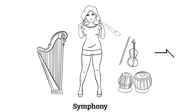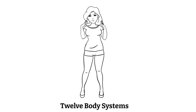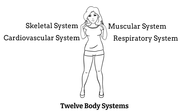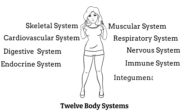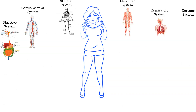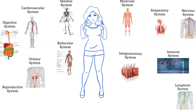Just as a symphony consists of various instruments, the body performs harmoniously with 12 distinct systems, each contributing to the magnificent masterpiece of the human body. The 12 body systems are: the skeletal system, the muscular system, the cardiovascular system, the respiratory system, the digestive system, the nervous system, the endocrine system, the immune system, the integumentary system, and the lymphatic, urinary, and reproductive systems.